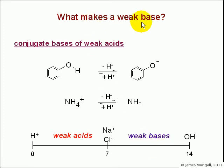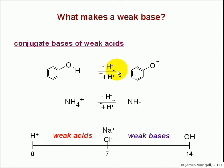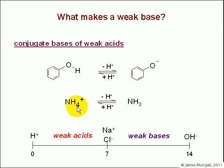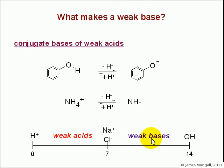Just to extend this a little bit further — a weak base is a conjugate base of a weak acid. So if we have a weak acid such as phenol, and we take off an H plus, that will leave you with the phenoxide ion, so O minus. That will be a weak base — so a weak acid becomes a weak base. We could do something similar with ammonia and ammonium. The ammonium ion is a weak acid; take away the H plus to give NH3, which will be a weak base. So we're jumping from weak acid to weak base depending on whether or not you've got the H plus.